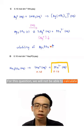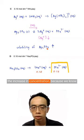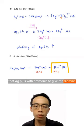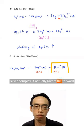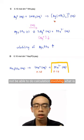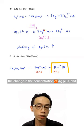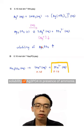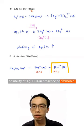Now for this question, we will not be able to calculate the increase in concentration, because we know that Ag+ with ammonia to give me diamine-silver complex actually favors the forward process, but since I don't have information involving the equilibrium constant term, I will not be able to do calculation involving what is the change in the concentration of Ag+, and therefore I will not be able to calculate the new solubility of Ag3PO4 in presence of ammonia.